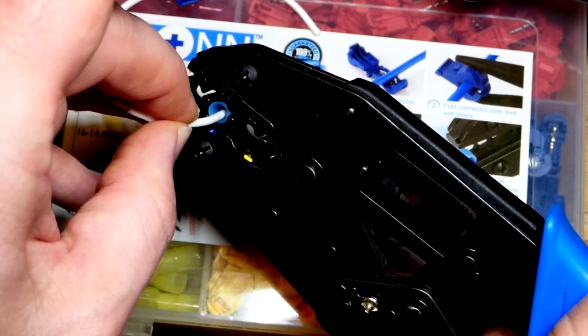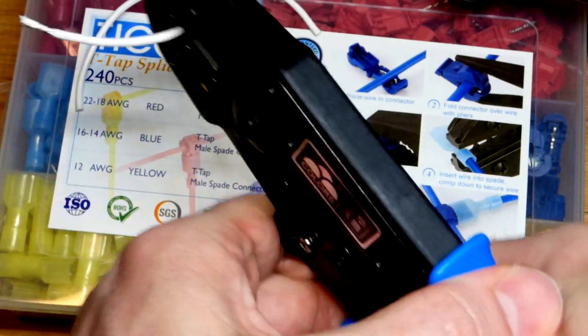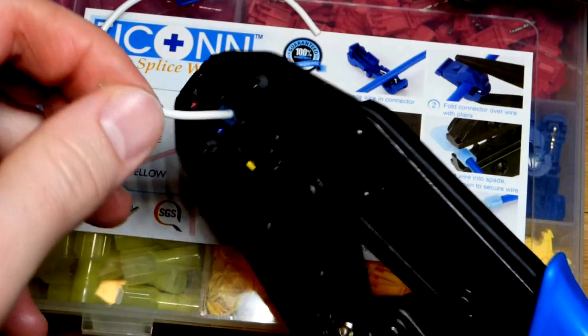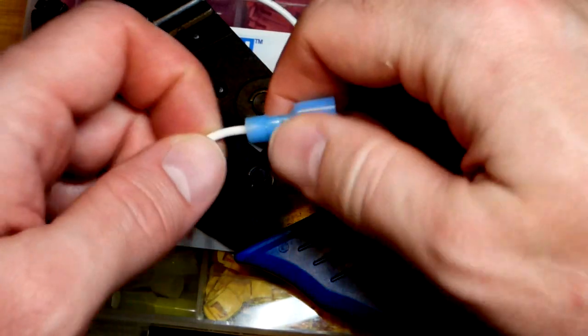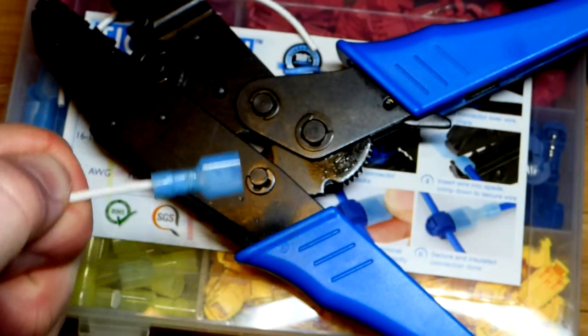We don't want the insulation to go into the metal part that's going to get crimped down. We're going to push it down. Now I have to squeeze pretty hard. There we go - it released. We should have a good connection. We want to make sure we tug on it. I'm tugging pretty good. That is in there pretty good.